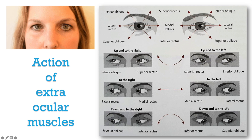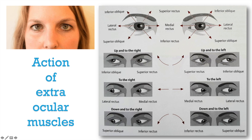Similarly, in the case of the left eye, superior rectus will be elevating the eyeball upwards and medially. Depressing the eyeball and adducting is done by inferior rectus. Now, talking about the obliques — inferior oblique and superior oblique — you can see here very well that their action is opposite to their names.